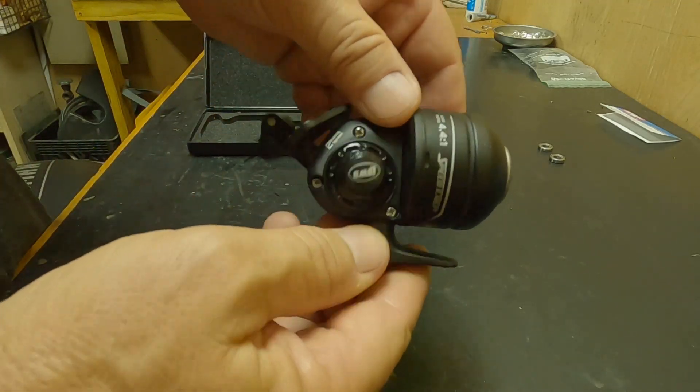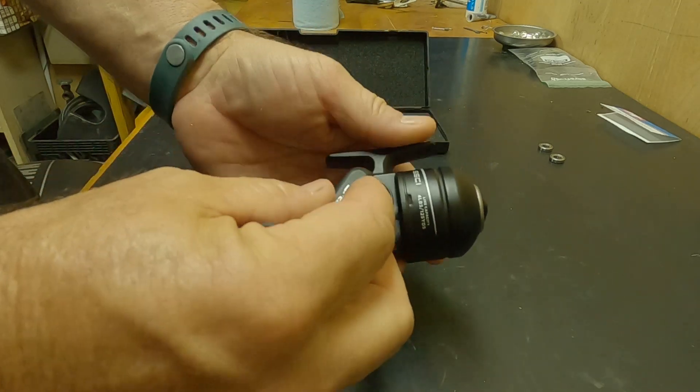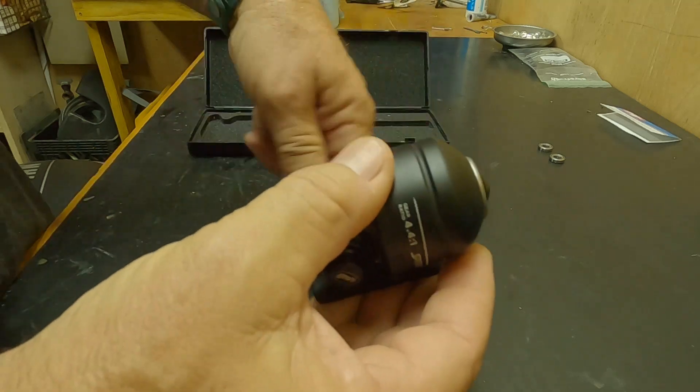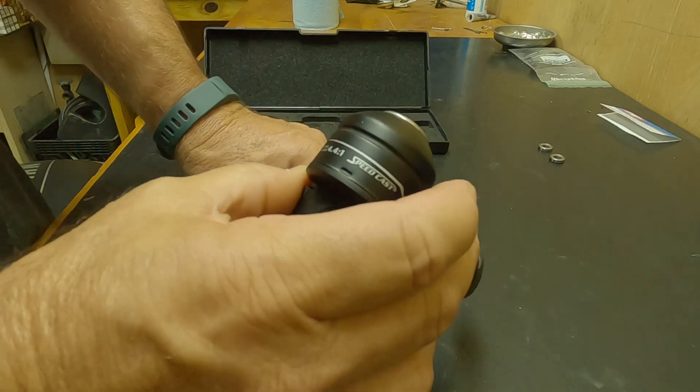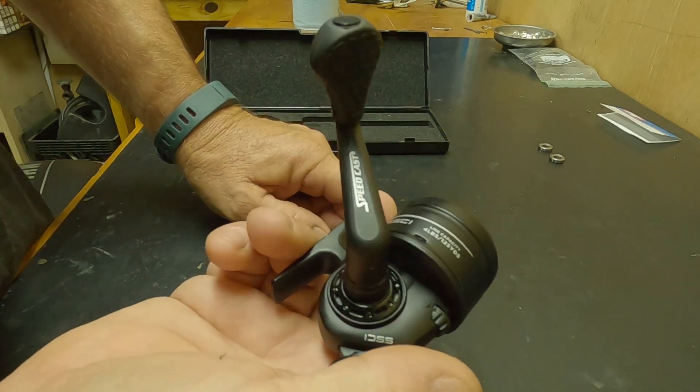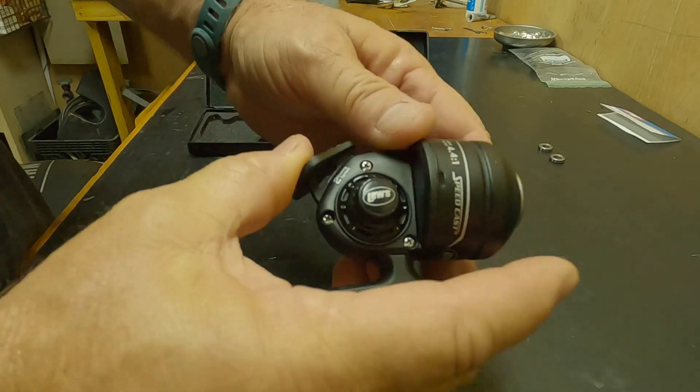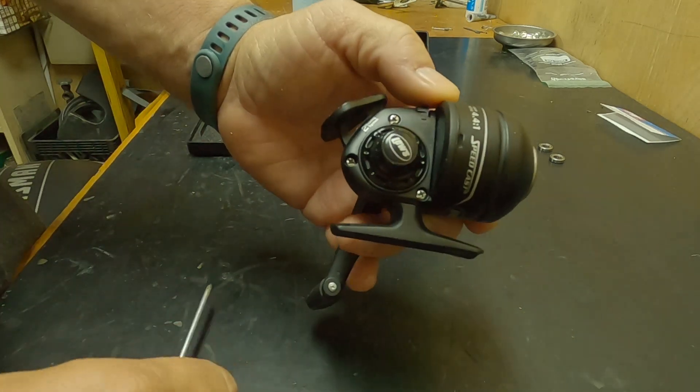Alright, I got this Lou speed cast cheap reel. Got to have an extra one on a boat or if the wife wanted to go fishing. We're going to do a bushing upgrade to a bearing.